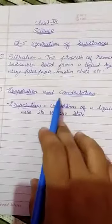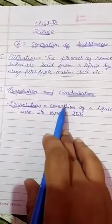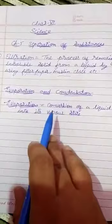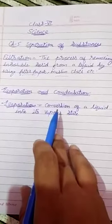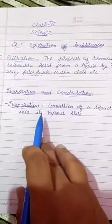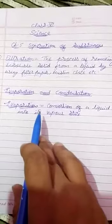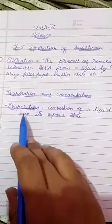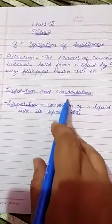We can see this process in nature also. When the temperature increases, the process of evaporation becomes faster. Due to it the clouds are formed. Now the next method we are going to do is condensation.